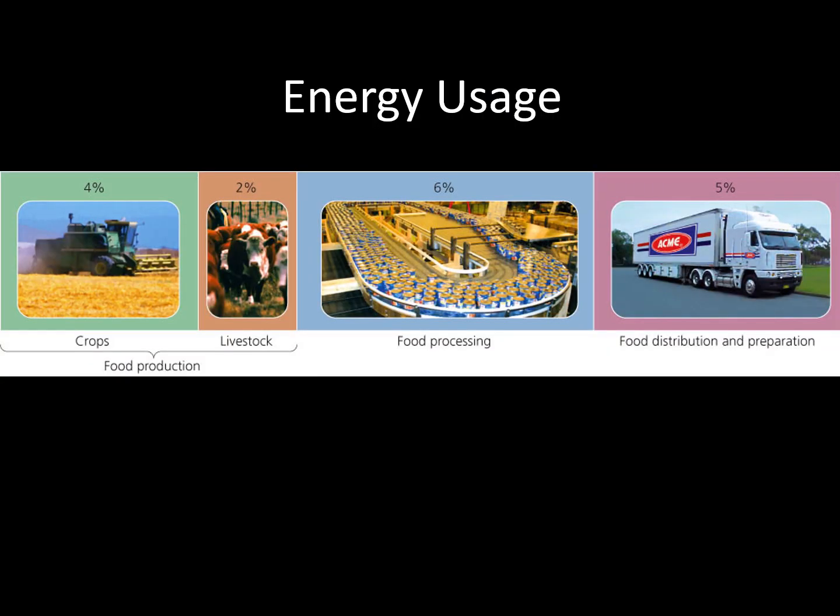Next up is energy use. This one ties into effects on water, air pollution, and human health, simply because of the shocking amount of energy used to produce and transport food. Up to 70% of the 17% of the energy used by industry in this country is related to food production and transportation. That energy has to be generated from power plants, which add to water and air pollution.